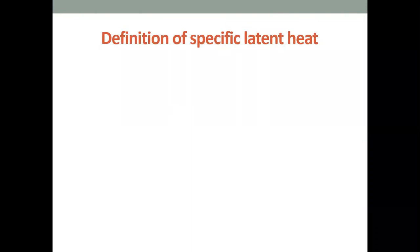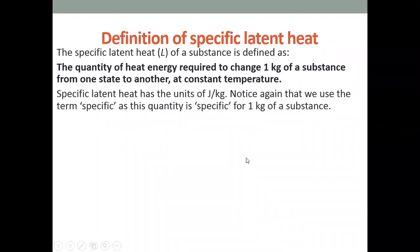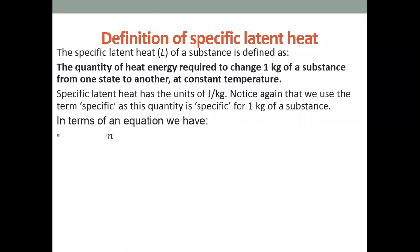Now let's define specific latent heat. The specific latent heat of a substance is defined as the quantity of heat energy required to change one kilogram of a substance from one state to another — for example, liquid to solid, solid to liquid, or liquid to gas. The temperature must remain constant during the state change. The unit of specific latent heat is joule per kilogram (J/kg).